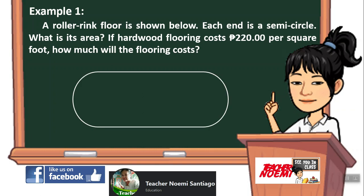Let's start Example number 1. A roller rink floor is shown below; each end is a semicircle. What is its area? If the hardwood flooring costs 220 pesos per square foot, how much will the flooring cost? Let's analyze and identify the figures. The figures we can easily identify are the rectangle and two semicircles.